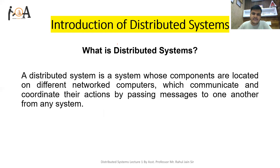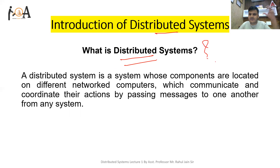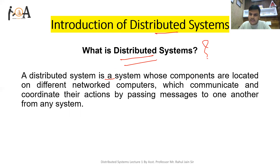Starting with the introduction of distributed systems — the first question that arises is: what is a distributed system? A distributed system is a system whose components are located on different networked computers, which communicate and coordinate their actions by passing messages to one another.